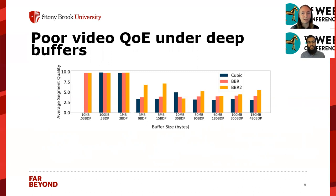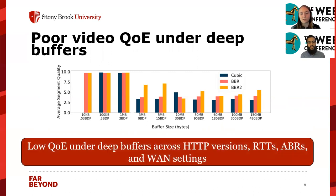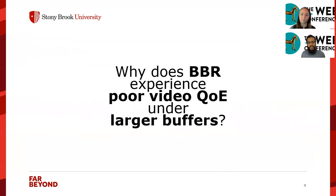Three megabytes, or 9 BDP in the context of our network settings, is not a particularly large buffer — you could find a buffer this size in all kinds of networks. We confirmed this result across HTTP versions, RTTs, ABR algorithms, and WAN settings, and this result holds. Since we ran a wide range of experiments and find that BBR still has poor QoE under large buffers across all settings, this hints at a deeper BBR problem.